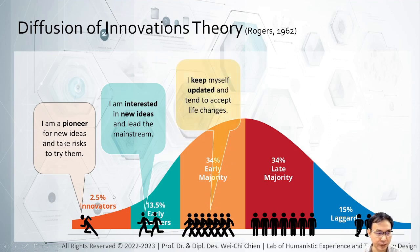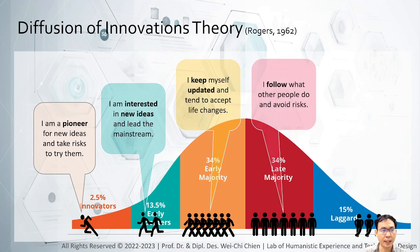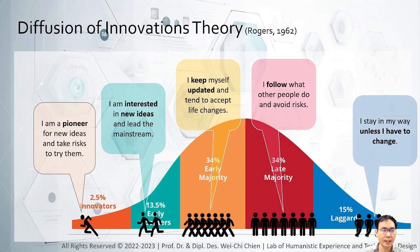Then the early majority keeps itself updated. They are one of the largest groups and tend to accept changes that are caused by innovation. Next to the early majority, we have the late majority. They basically follow what has been accepted by the society and avoid risks. Finally, there are laggards — in Chinese, 落後者 — who reject changes for different reasons. Some just hold negative attitudes toward any change, and some reject innovation because of their ethical considerations.